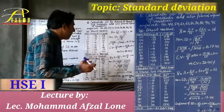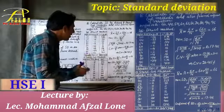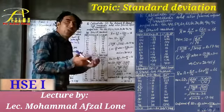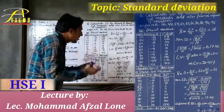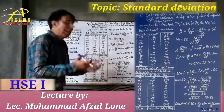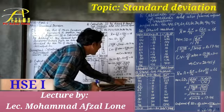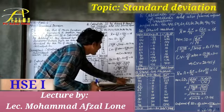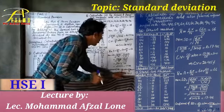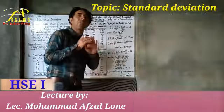Now finding the coefficient of variation for the shortcut method: CV = (standard deviation divided by x̄) into 100 = 17.46 divided by 66, multiplied by 100, which equals 26.45 percent. Thank you very much.